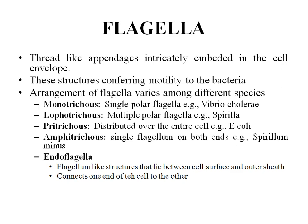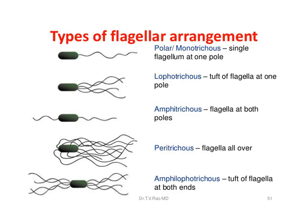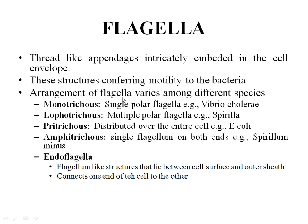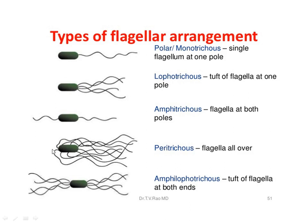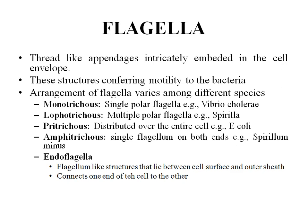If more than one flagellum is present at one pole, it is called lophotrichous. If flagella are present on all sides of the bacteria, it is called peritrichous. If one flagellum is present on each of the two poles, it is called amphitrichous. If there is a tuft of flagella on both poles of the bacteria, it is called amphilopotrichous.